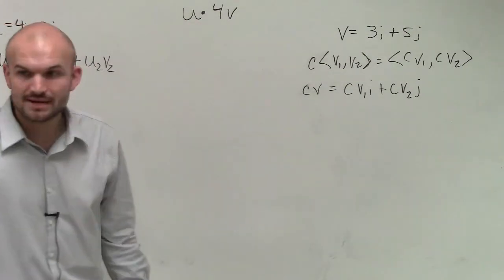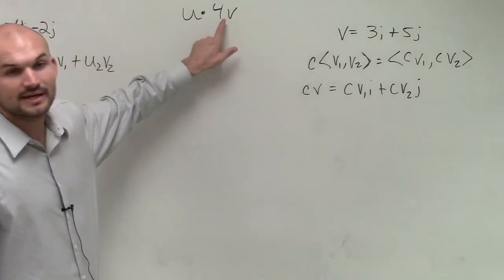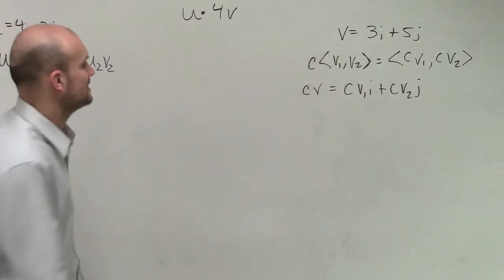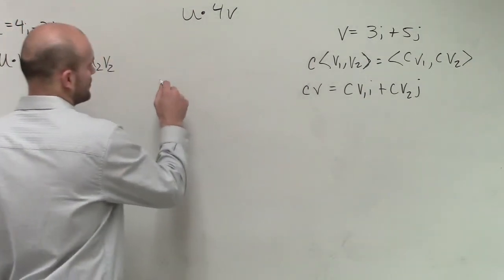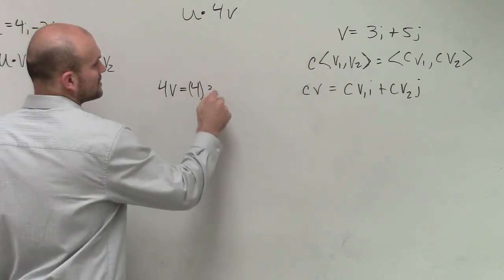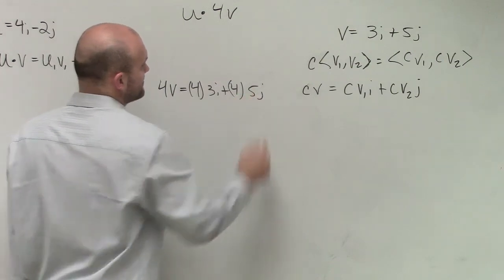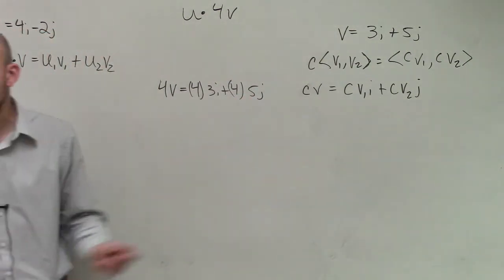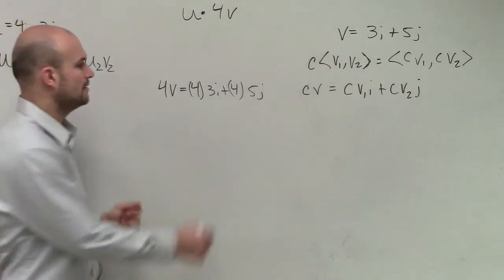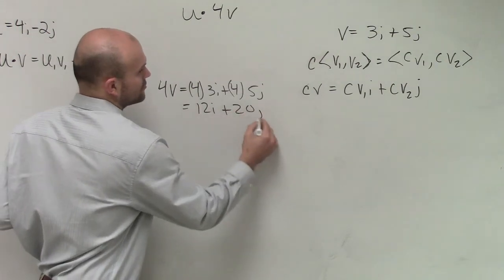So first thing is I have 4 times v. Let's figure out what 4v is. Let's do this multiplication first, and then do the dot product. So 4v is going to equal 4 times 3i plus 4 times 5j. Whenever your scalar times your vector, you multiply it to both of them. Therefore, we have 12i plus 20j.